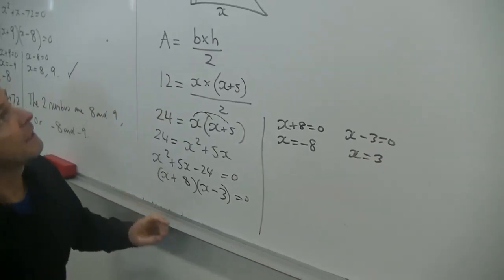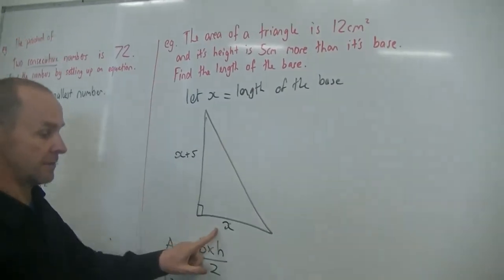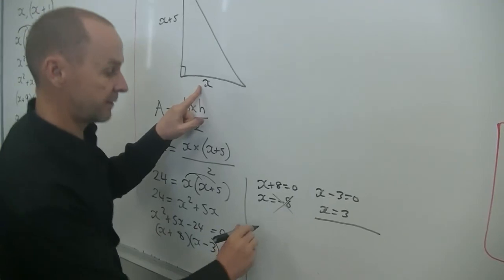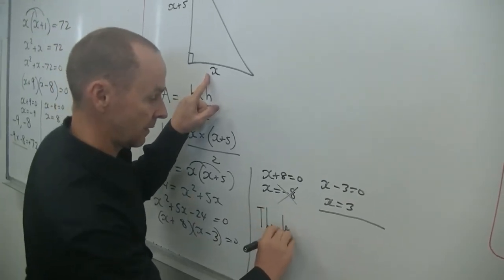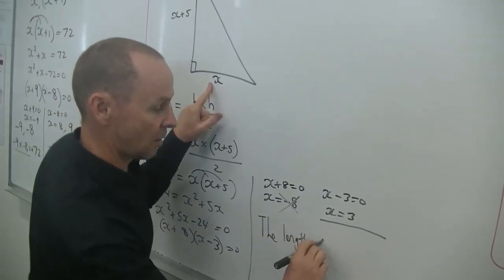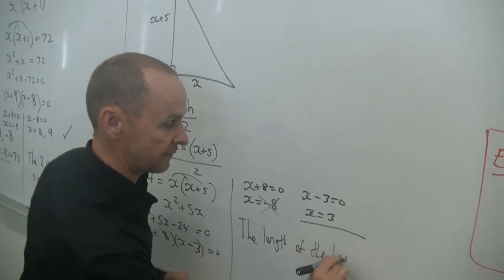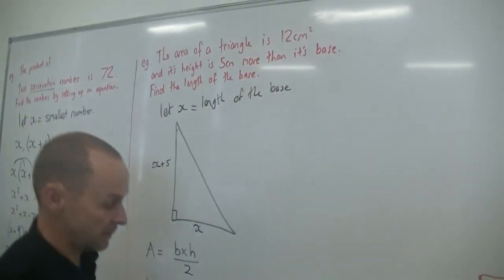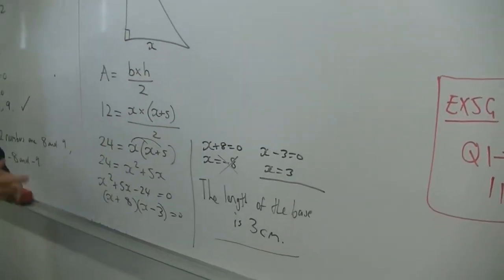Okay. Now let's have a think about it. x is the length of the base. The length cannot be negative, so that's not the right answer. So this must be my answer. So I'll say the length of the base is 3, and what are the units? Centimetres, is 3 centimetres. And there's my answer.